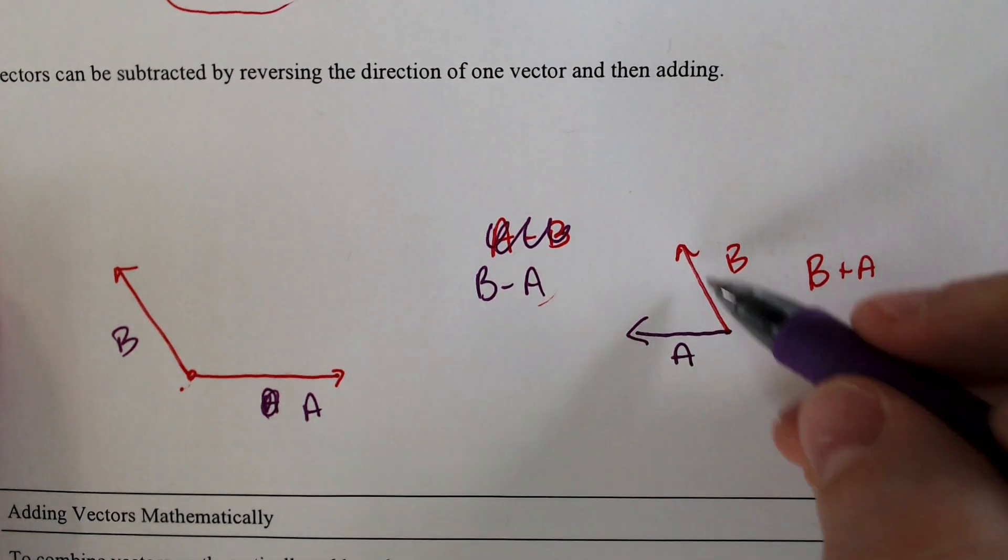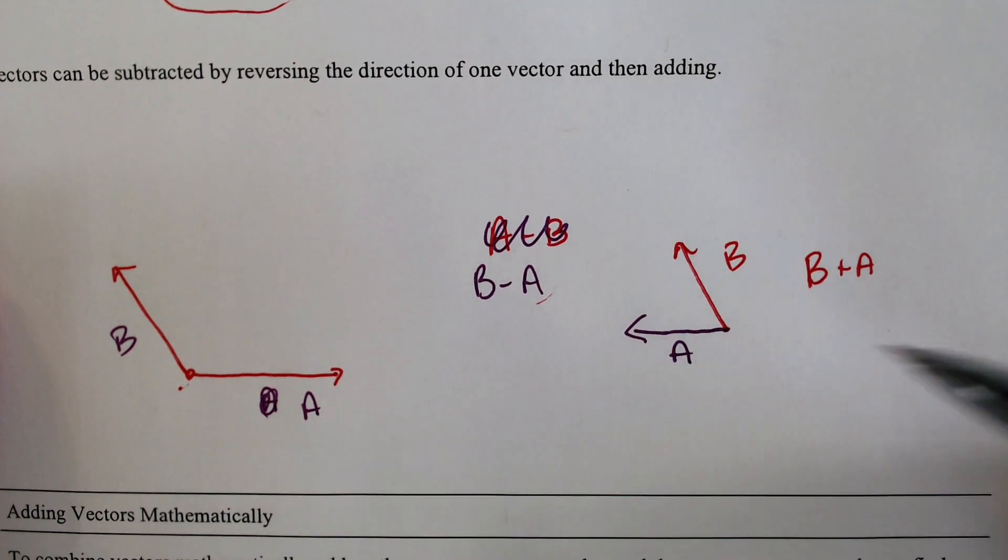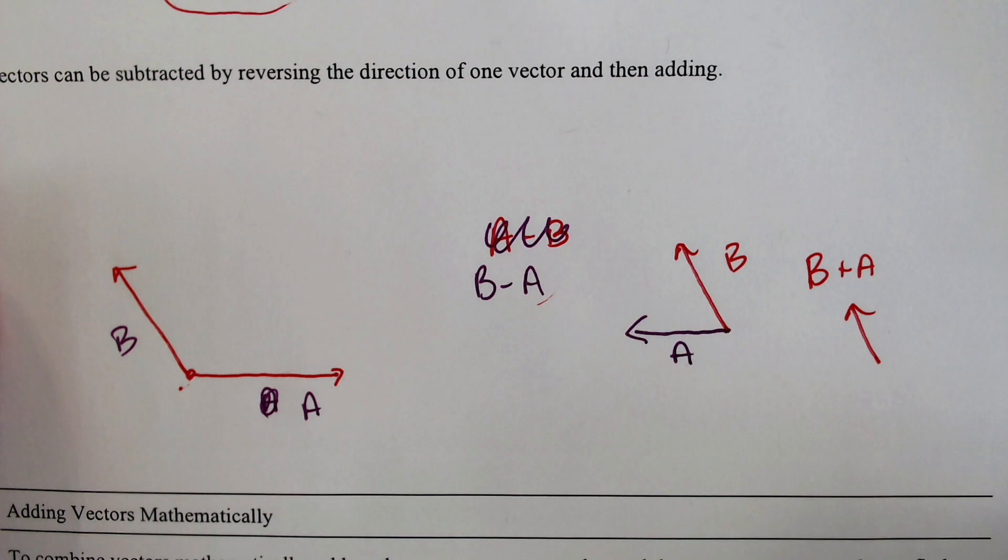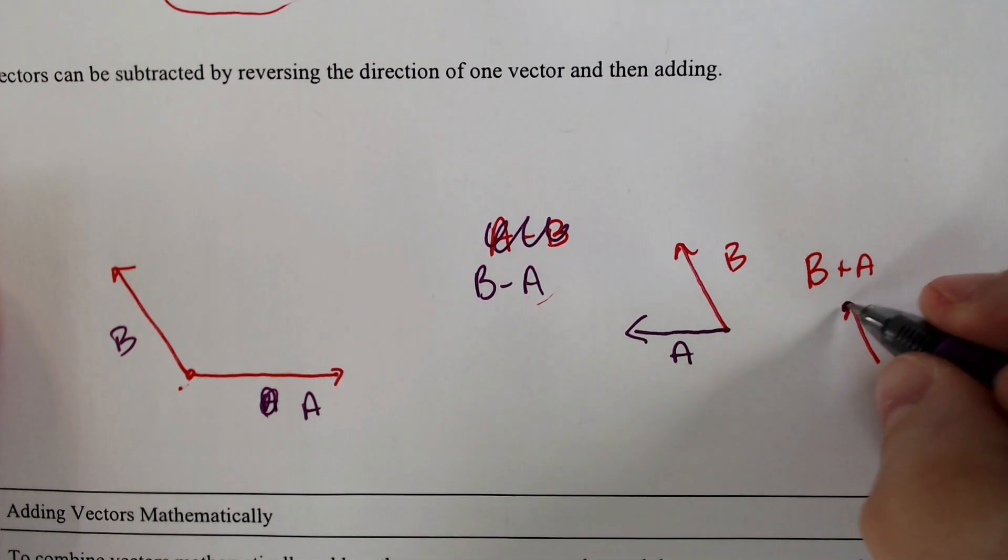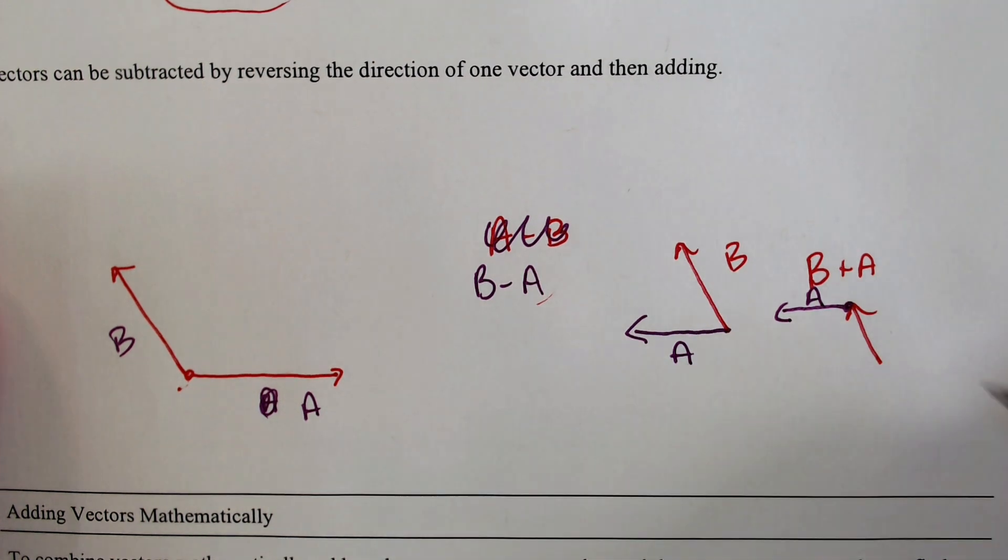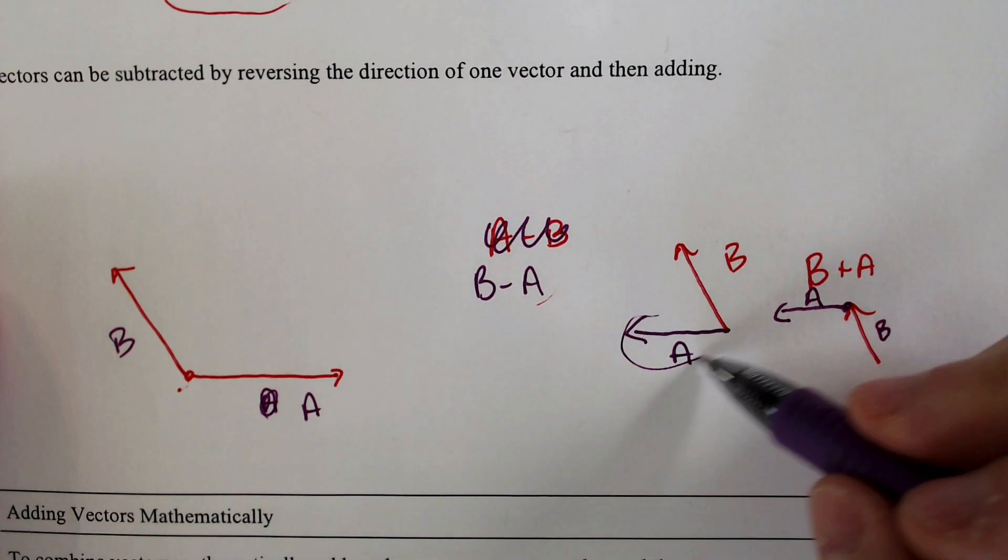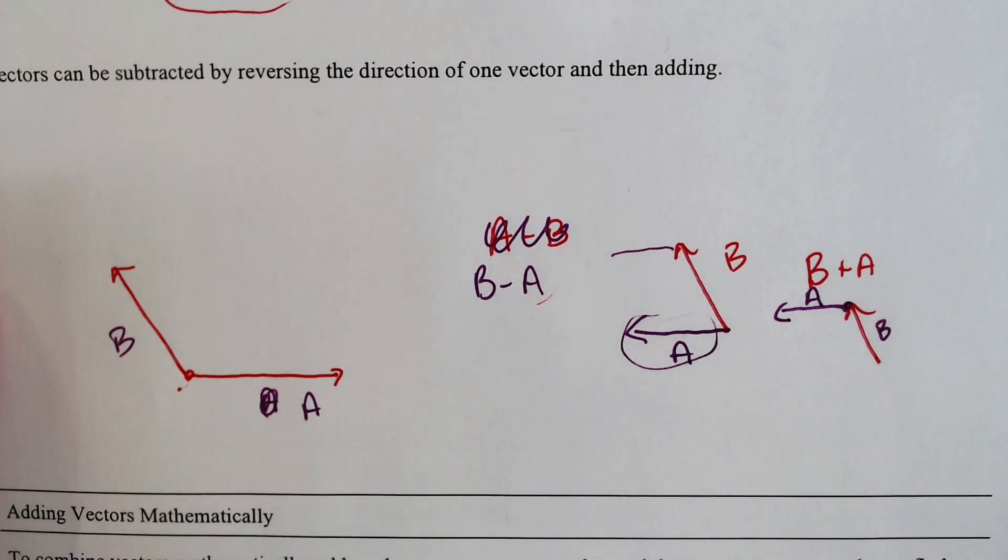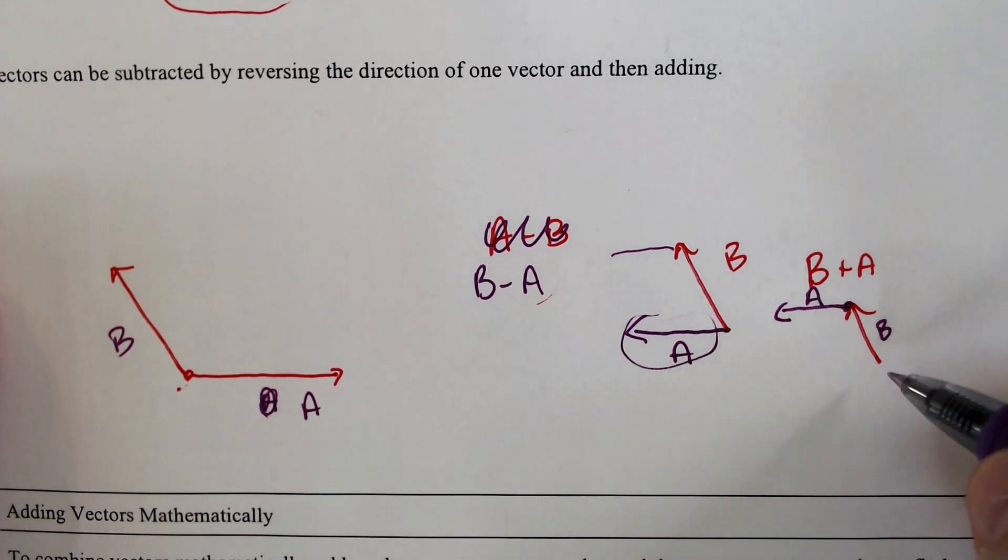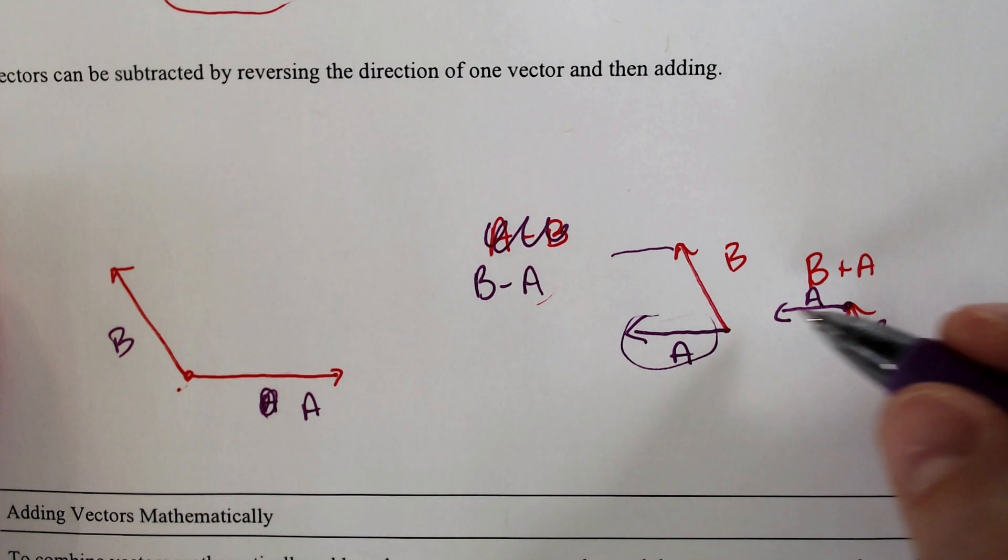Well, if we were adding B and A together, I would need to take this A and I would need to move it to the top of B. And that would be where my A would end up. So this is still B. We would just take this portion and move it up here. And if we do that, our resultant vector would be kind of like up and to the left and then really to the left.